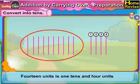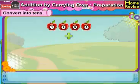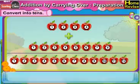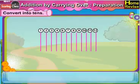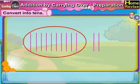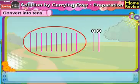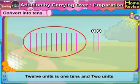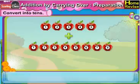So 14 units is 1 ten, 4 units. Next, when we add 4 units to 8 units, we get 12 units. In order to convert them, we'll draw 12 straight lines, make a group of 10 lines, and encircle them. The remaining single lines are 2, so 12 units can be written as 1 ten, 2 units.